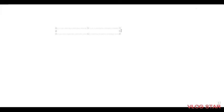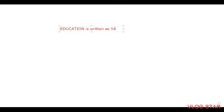Let us take a question from the same topic. The question has certain code in it — first we have to see the pattern. The question is: 'EDUCATION' is written as 5, 4, 21, 3, 1, 20, 9, 15, 14.